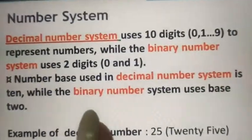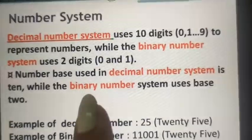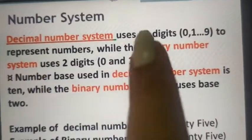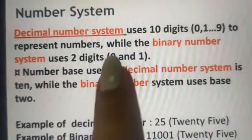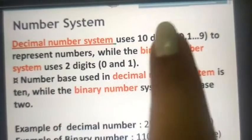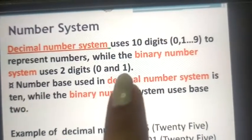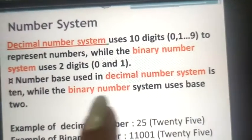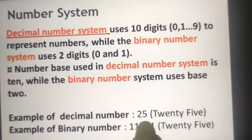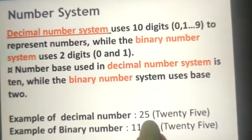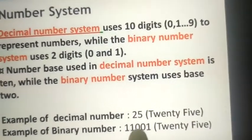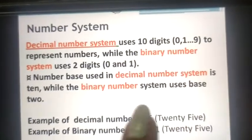Now, what is the number system? The number system is a language used in computers — humans use Hindi or English, but computers use number systems. The decimal number system uses 10 digits: 0 to 9, and has a base of 10. The binary number system uses only two digits, 0 and 1, and has a base of 2. For example, the decimal number 25 converts to binary as 11001. This is just an introduction to the number system.